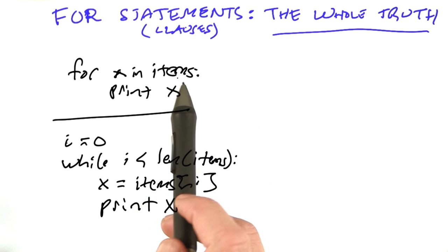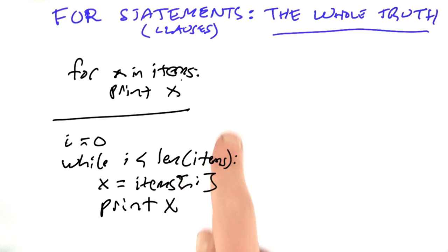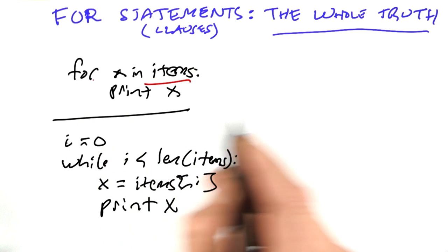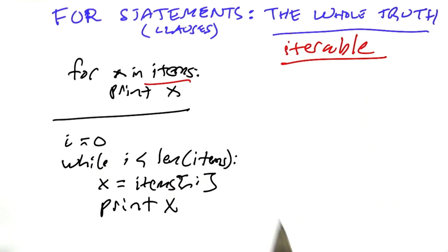But items can also be other things, as we've seen. It can be a generator expression, for example. Overall, Python calls the thing that can be iterated over in a for loop an iterable. And so strings and lists are examples of iterables, and so are our generators.